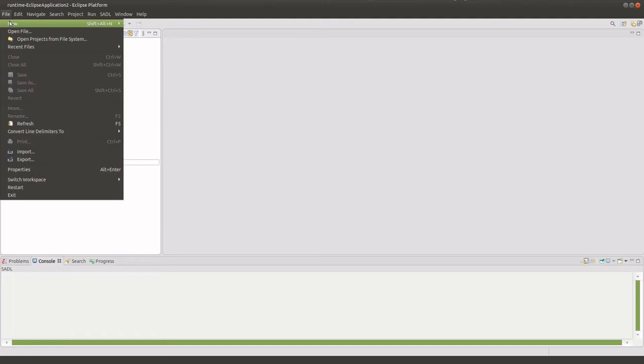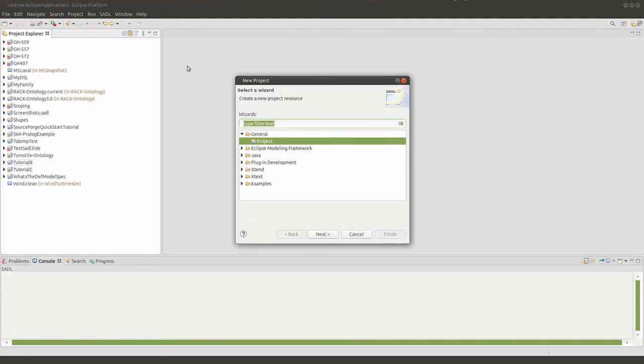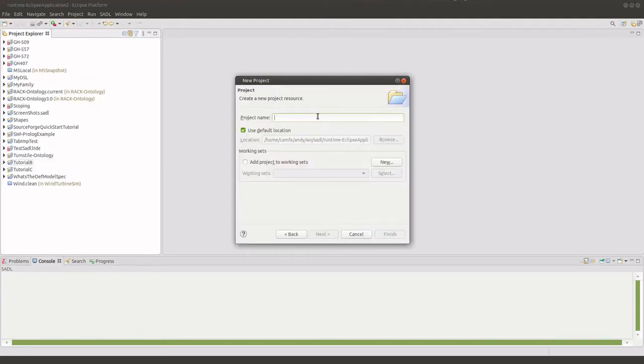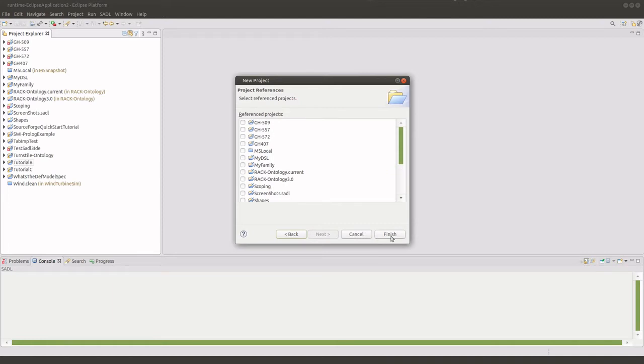We begin by creating a new project from the file menu. It's a general project. We'll give it a name tutorial, as we'll use it for all of these exercises.